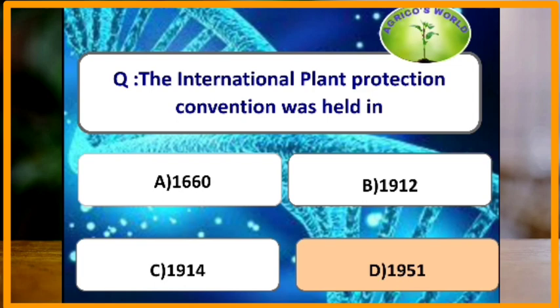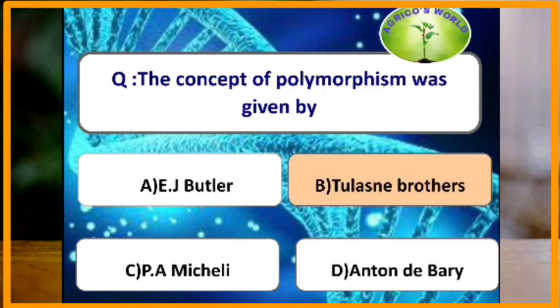The concept of polymorphism was given by which scientist? The concept of polymorphism was given by the Tulasne brothers.